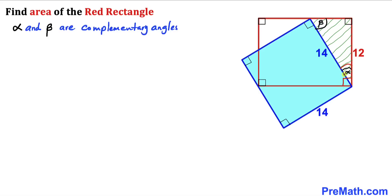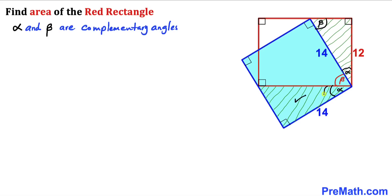Since this angle is 90° and this angle is alpha, this remaining angle must be beta, as alpha and beta are complementary. Looking at the blue square: this angle is 90°, this angle is 90°, this angle is beta, so this angle must be alpha. Then in this triangle, this angle is alpha, this angle is 90°, so this angle must be beta.